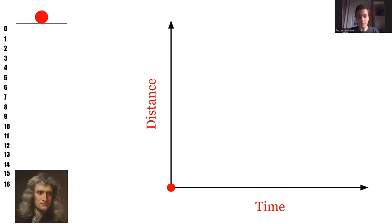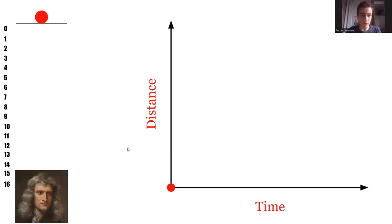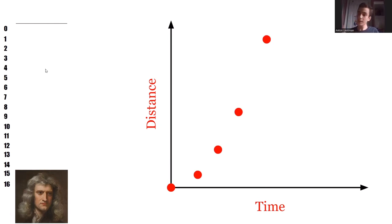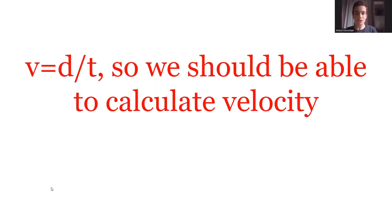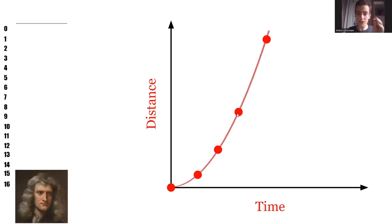Suppose we have this apple falling. On the left we have the apple's position, and generally when an object on Earth falls it accelerates — it falls faster and faster. Here we have a graph of distance versus time of the apple, where distance is the distance fallen. According to legend, the apple fell right on Newton's head, which is how he discovered gravity. Newton's question was: how do we find velocity at any point in time, like at time equals seven?